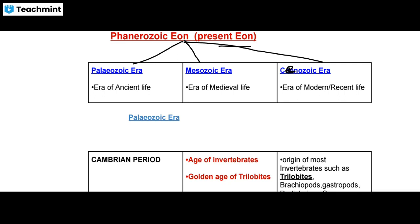The Paleozoic era is the era of ancient life. The Mesozoic era is the era of medieval life. The Cenozoic era is the era of modern or recent life. So here, Paleozoic era is known as the era of ancient life, and Mesozoic era is the era of medieval life.